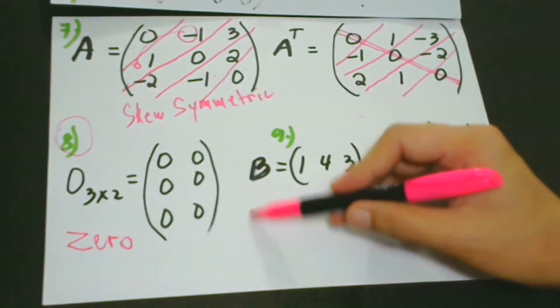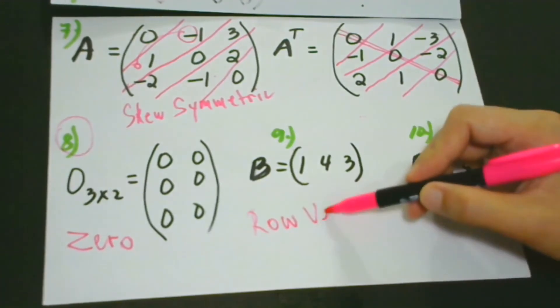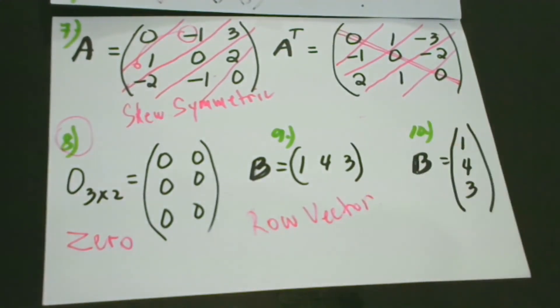Then we have our row vector. Number nine is what we call a row vector. Just by the name itself, we can only see a vector, which is a row. This kind of matrix consists only of a single row. What about column? When there's only one column, what do we call that? By the name itself, of course, we call this column vector. It consists of a single column only. In short, as far as nine and ten are concerned, we can say that a vector can also be a matrix.